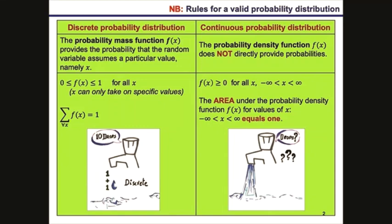In addition, for any continuous probability distribution, the probability of observing an exact value from the interval of the random variable defined is 0. Take an example where x is the volume of water flowing from a tap. Now it's impossible to count the number of drops; however, it's possible to measure the volume of the water.